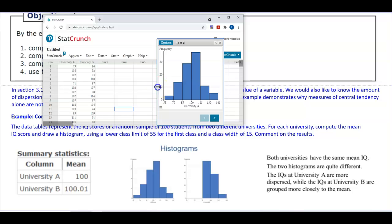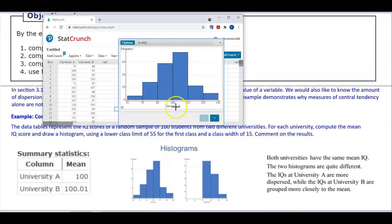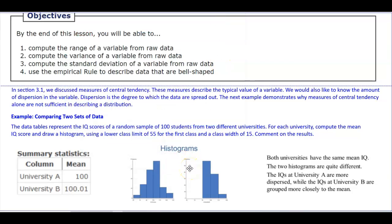Here you can see the histogram of University A, and then if we take a look at the histogram of University B, which is now here in this picture. Both universities have the same mean IQ. We saw here for the summary statistics, they both have the same mean, which is hovering around 100.